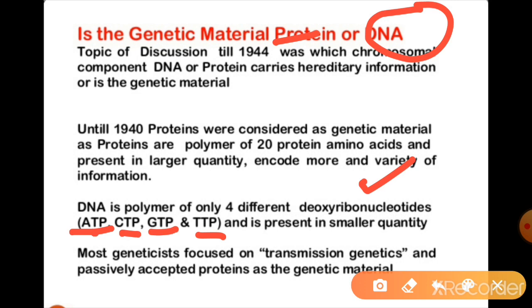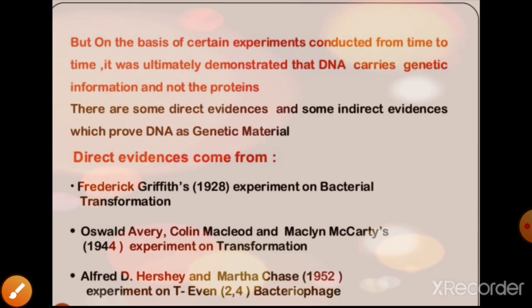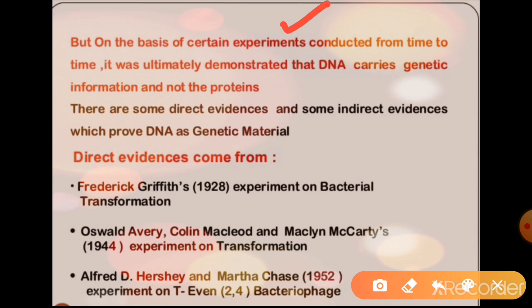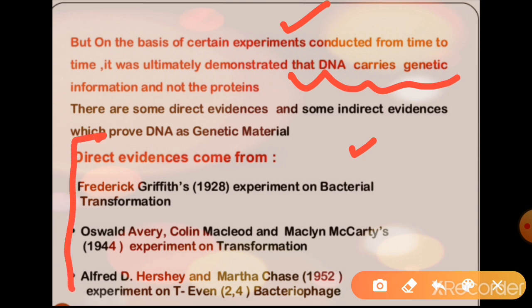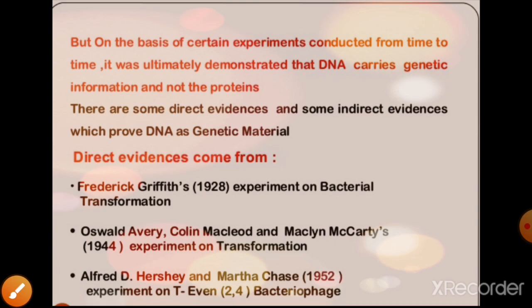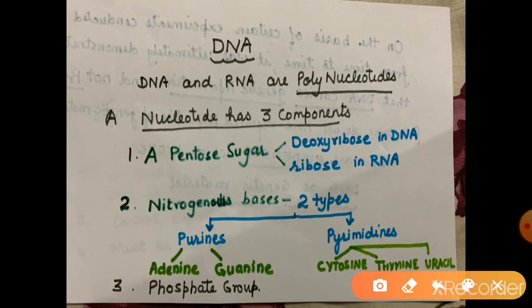In 1944, when there were studies in genetics, protein was considered the genetic material. Then, on the basis of certain important experiments, it was demonstrated that it is the DNA which carries the genetic information and not proteins. There is some direct evidence and some indirect evidence. Experiments like Griffith's transformation experiment, Avery-MacLeod-McCarty experiment, and Hershey and Chase experiment with bacteriophage — we will discuss these three experiments, and based on them, that genetic material is not protein, it is DNA.